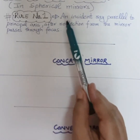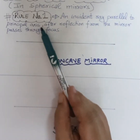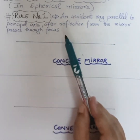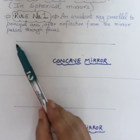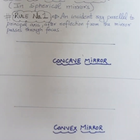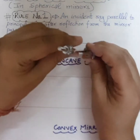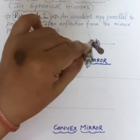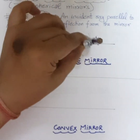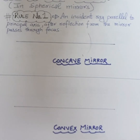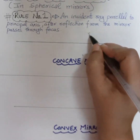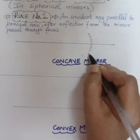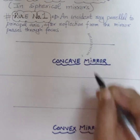Rule number 1 says that an incident ray parallel to the principal axis, after reflection or after bouncing back from the mirror, it will pass through focus. To draw this, first we will draw a principal axis - a straight line - then we will draw one curved mirror. We will take the concave mirror first, so using a compass or D, draw the curve to show the mirror. As you know, this is a concave mirror; the front side is the reflecting side and behind this is the polished side.